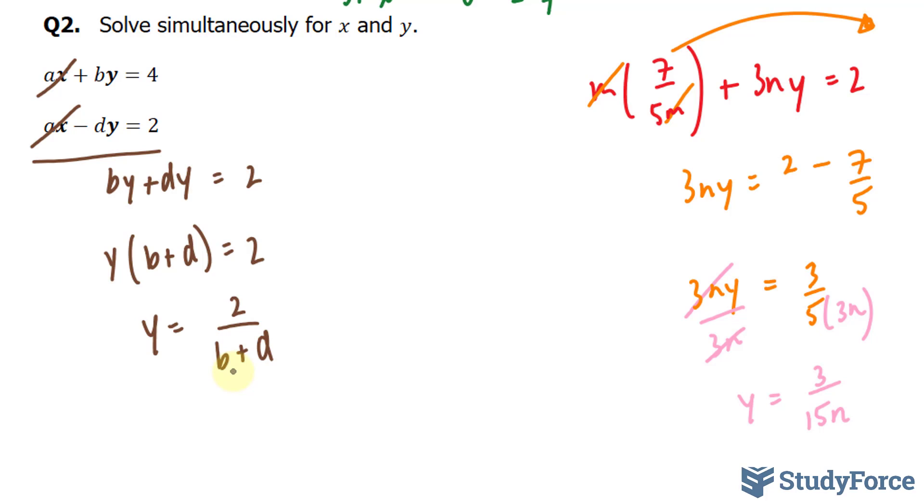Now I need to find my x coordinate. This one is slightly harder to do. I'll take this now and place it into any of these two equations. I'll place it into the first one. So I have a times x plus b times this fraction, 2 over b+d. And the reason why I say this one is harder is because we're dealing with a lot of fractions. And oftentimes, fractions scare students. So I'll show you how to do this. You'll take this b and multiply it to this fraction. So b times 2 gives us ax plus 2 times b over b plus d. This is equal to 4.